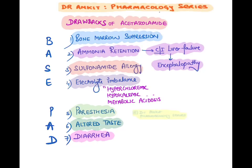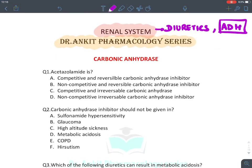Carbonic anhydrase inhibitors cause ammonia retention because ammonia requires acidic urine to be excreted; these drugs turn urine alkaline, so ammonia is retained. In liver failure, the liver cannot convert ammonia to urea, leading to hyperammonemic encephalopathy. They are contraindicated in sulfa allergy (as they are sulfonamides) and cause hyperchloremic, hypokalemic metabolic acidosis. They also cause paresthesia, altered taste, and diarrhea.